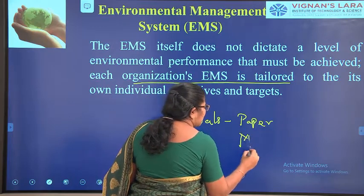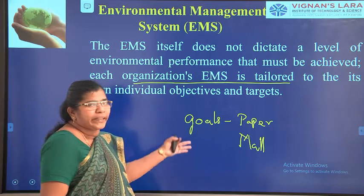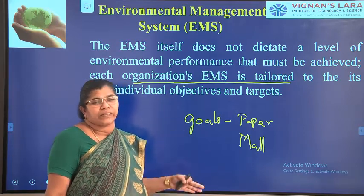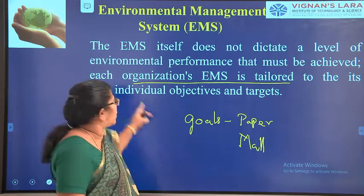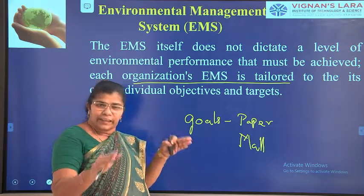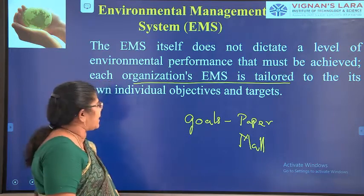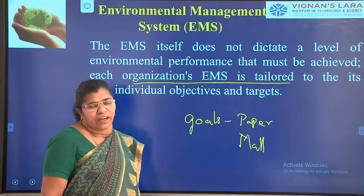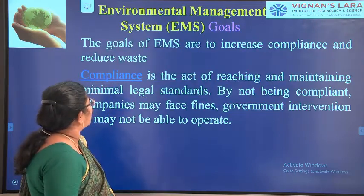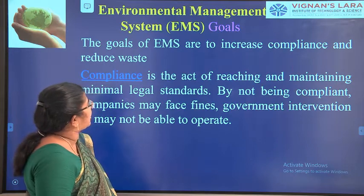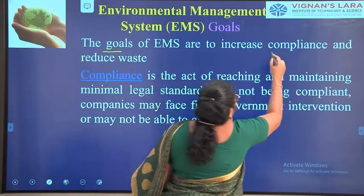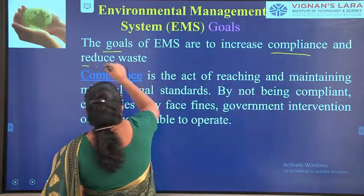Each industry or project will have different goals, so the EMS is tailored — not a ready-made one. It is set to the organisation's own individual objectives and targets. The main goals of EMS are to increase compliance and reduce waste products — to reduce the effect of waste particles on the environment. Compliance means the act of reaching and maintaining the minimum legal standards set by the government.